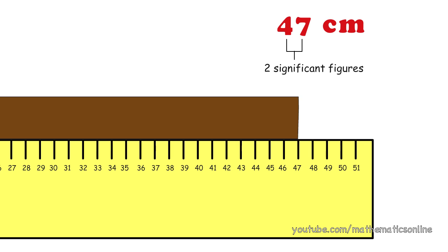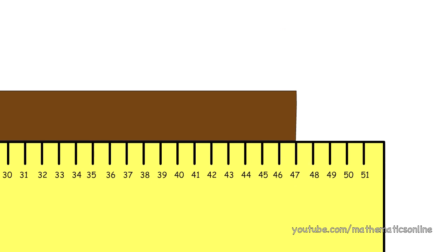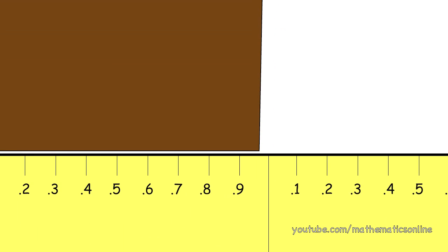But if we look closer, the precision of our measuring stick increases, and we see that the block of wood measures 46.9. The number of significant figures changes to 3.